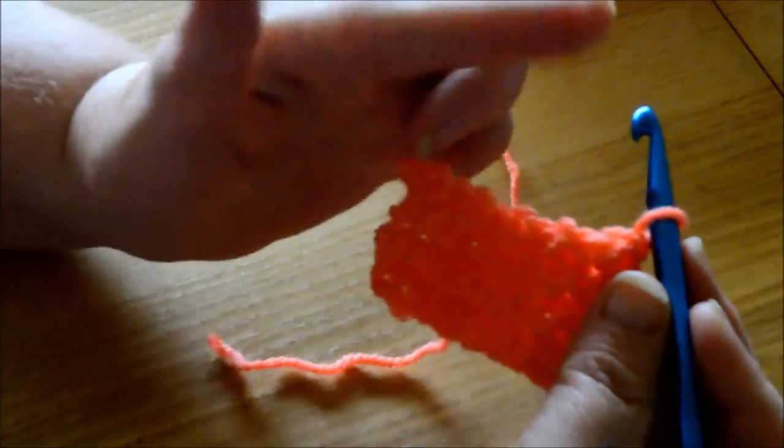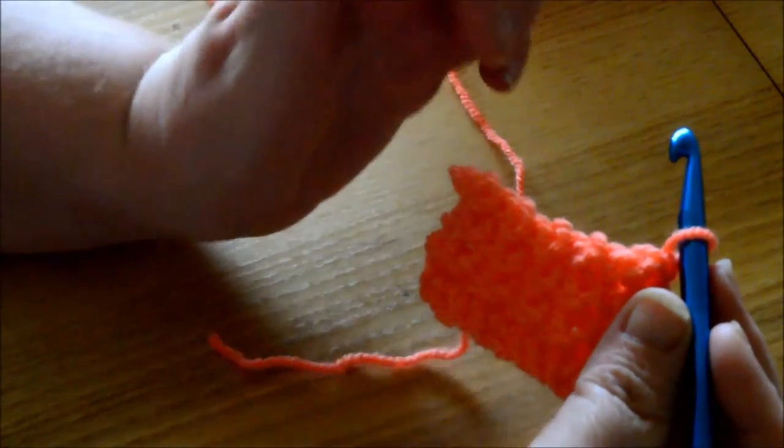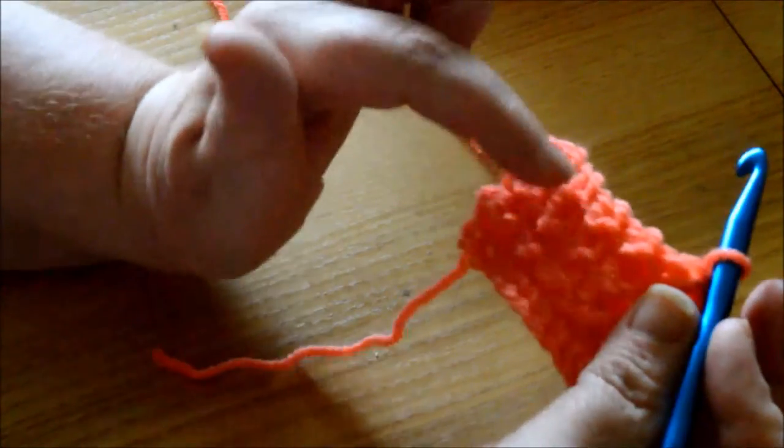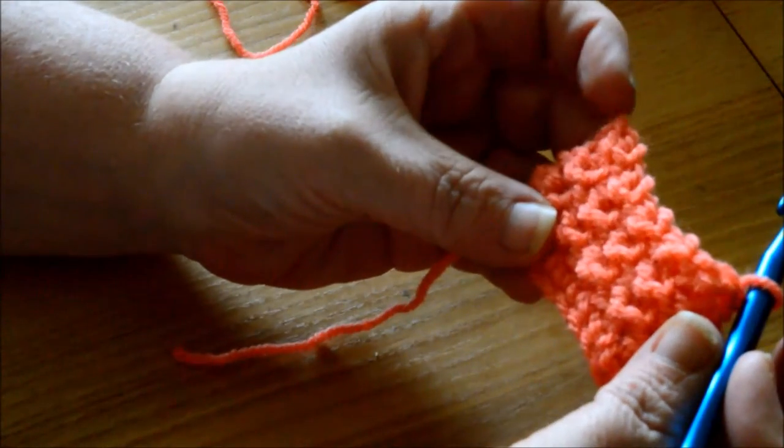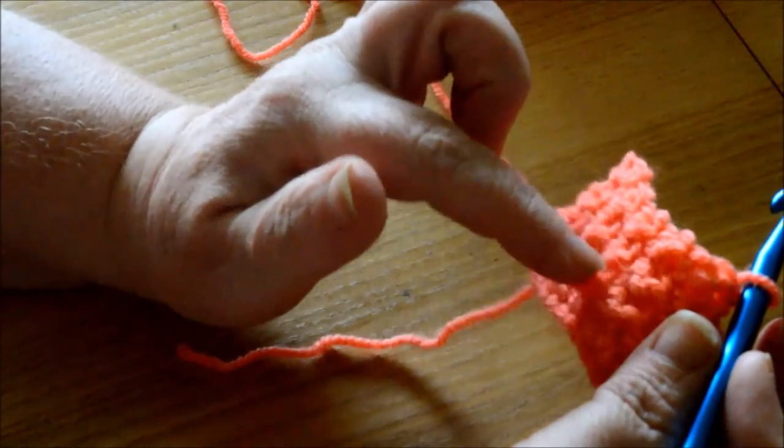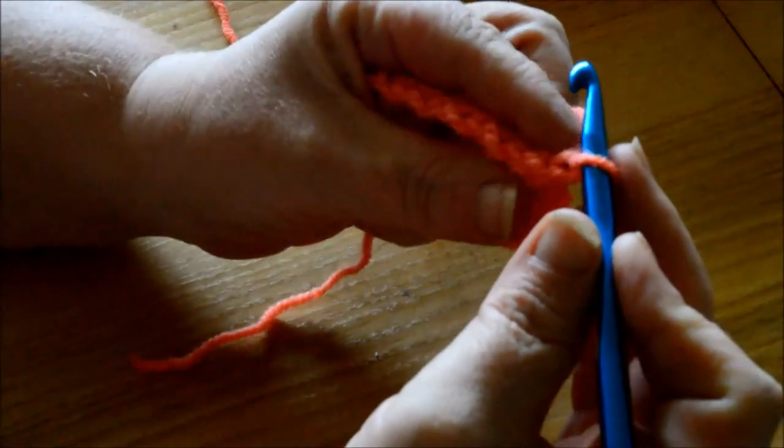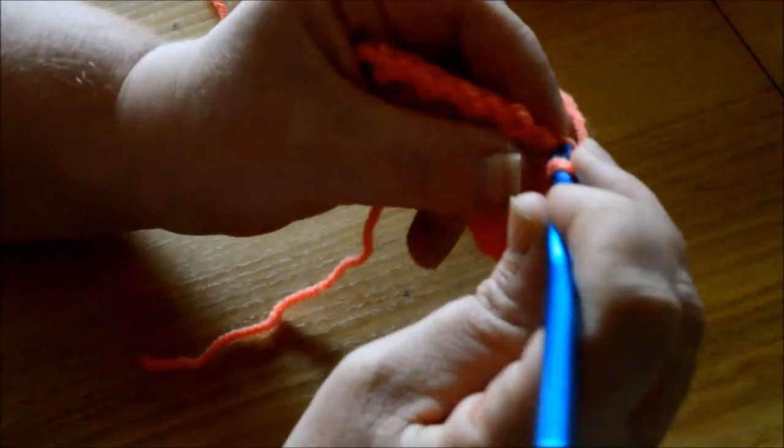If you turn your work around, you start with the front loop again, and that way it will jump, and that's why you get those gartered look, I don't know how you say.